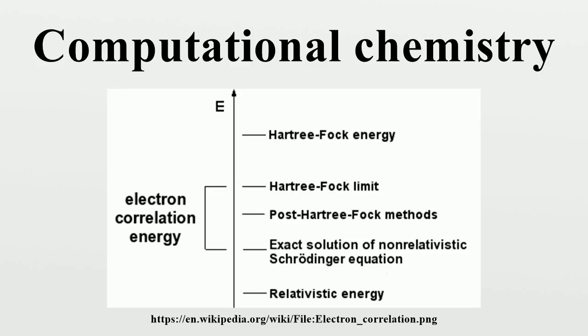Building on the founding discoveries and theories in the history of quantum mechanics, the first theoretical calculations in chemistry were those of Walter Heitler and Fritz London in 1927. The books that were influential in the early development of computational quantum chemistry include Linus Pauling and E. Bright Wilson's 1935 Introduction to Quantum Mechanics with Applications to Chemistry, Eyring, Walter and Kimball's 1944 Quantum Chemistry, Heitler's 1945 Elementary Wave Mechanics with Applications to Quantum Chemistry, and later Coulson's 1952 textbook Valence, each of which served as primary references for chemists in the decades to follow.